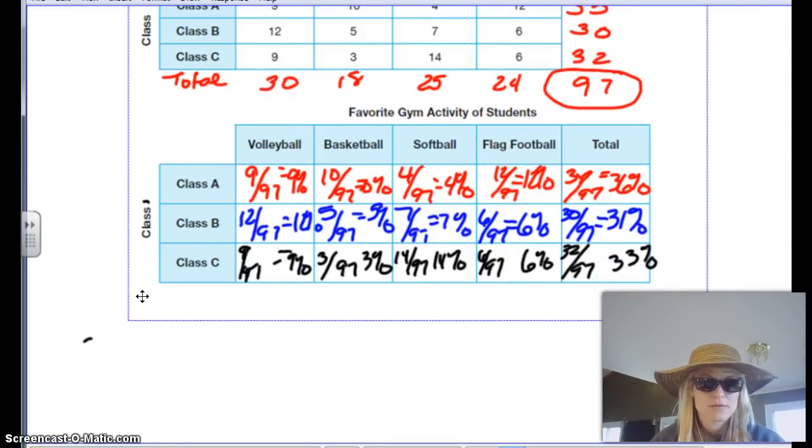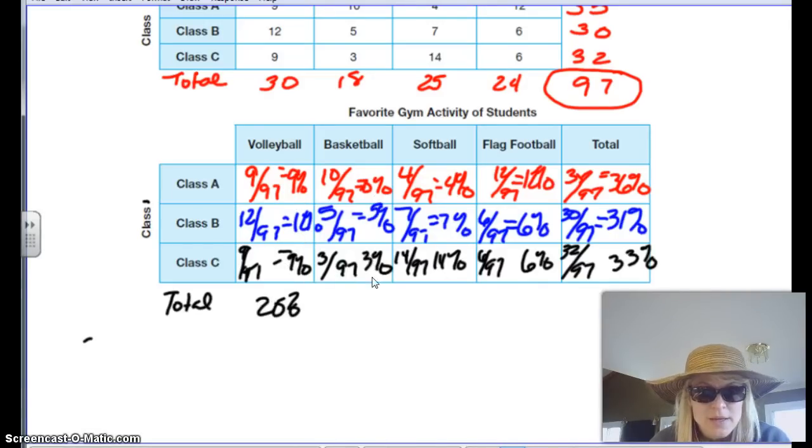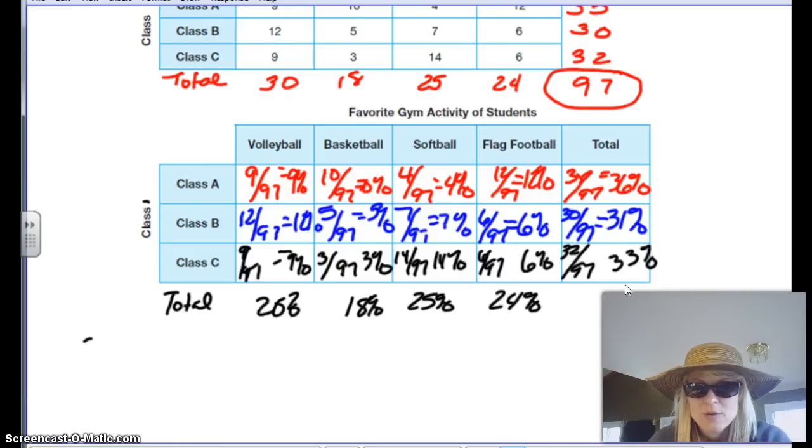So then we want to find the total this direction also. We're going to write in total right here. And then we just need to add up the total this way. So 9 and 9 is 18 plus 12. That would give me a 20% for volleyball. And if we add up this way, we have 10, 5, 15. That's 18%. And then that would give me 18. 14 plus 4 is 18 plus 5 is 25%. And then we have 12 and 12 is 24%. And then hopefully this should give us 100% because we're talking about all the students.